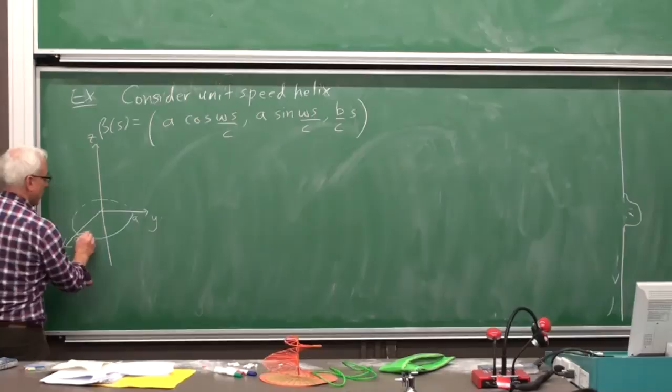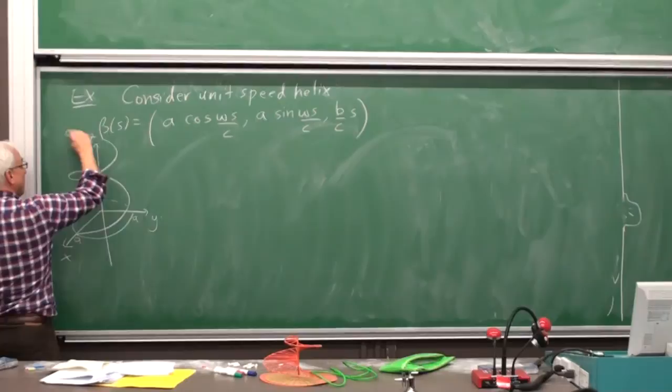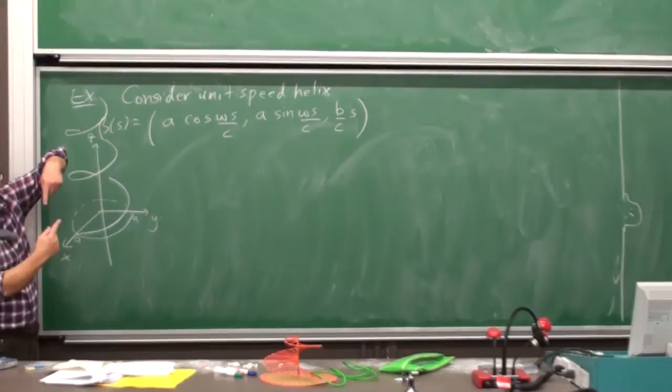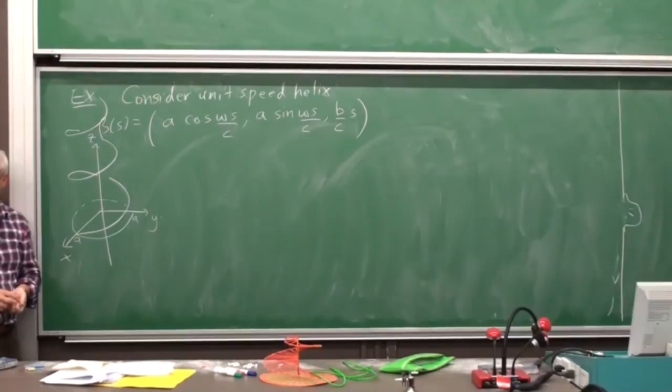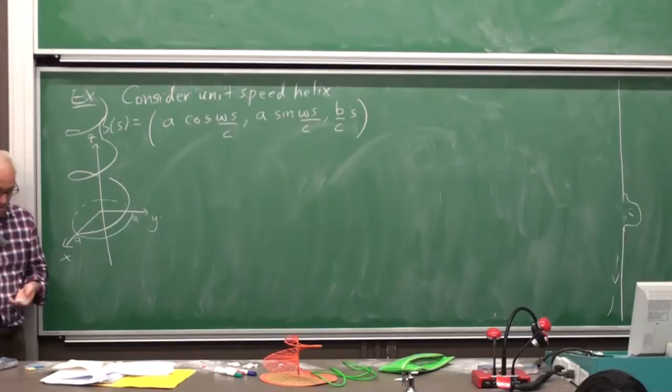The result is that we start here, and so we're going around, spiraling at steady pace up the Z axis on a cylinder, the center of the Z axis, radius A, and we're going around that cylinder at steady pace up the cylinder.